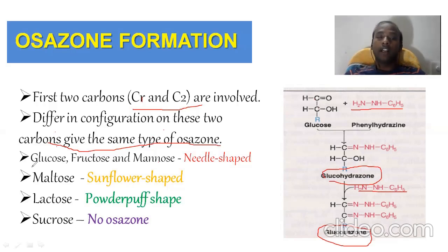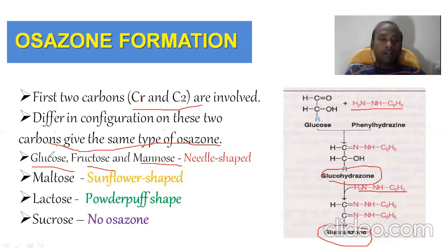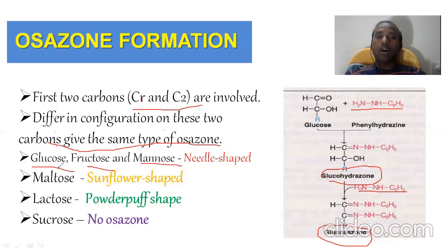A best example: glucose, fructose, and mannose — these monosaccharides differ only at the first two carbons. As I taught previously about epimers, glucose and mannose are C2 epimers, meaning there is a difference only at carbon 2. If there is a change at C1 or C2, they still form the same kind of osazone because two molecules of phenylhydrazine interact with those first two carbons. All three of these form needle-shaped osazones.